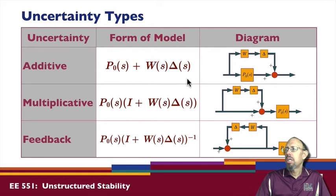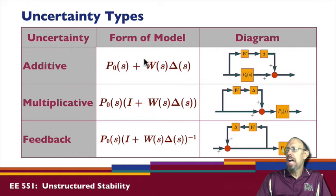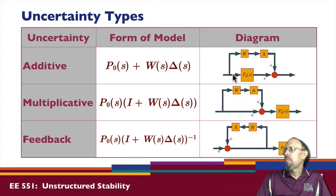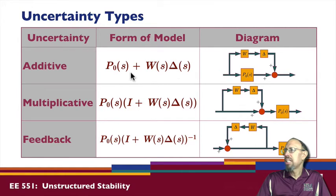We have different ways in which uncertainty can appear. We can have it appear as an additive form — or subtractive — in which case the uncertainty adds directly to the nominal plant P-zero. In a block diagram form it might look something like this, so it's in parallel with the nominal plant. We could have multiplicative uncertainty where the nominal plant and the uncertain part are in series — in parallel we get additive, in series we get multiplicative.